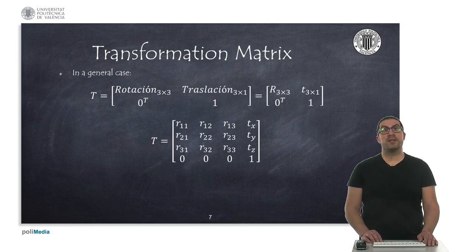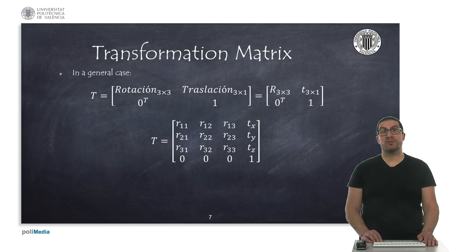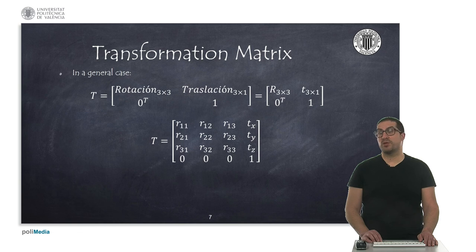These four basic transformations are the basis of composing any transformation matrix in 3D space. As we saw in the previous presentation, a general transformation will be composed of a 3x3 submatrix corresponding to the rotation matrix and a 3x1 translation vector, as a result of applying any rotation or translation operation.